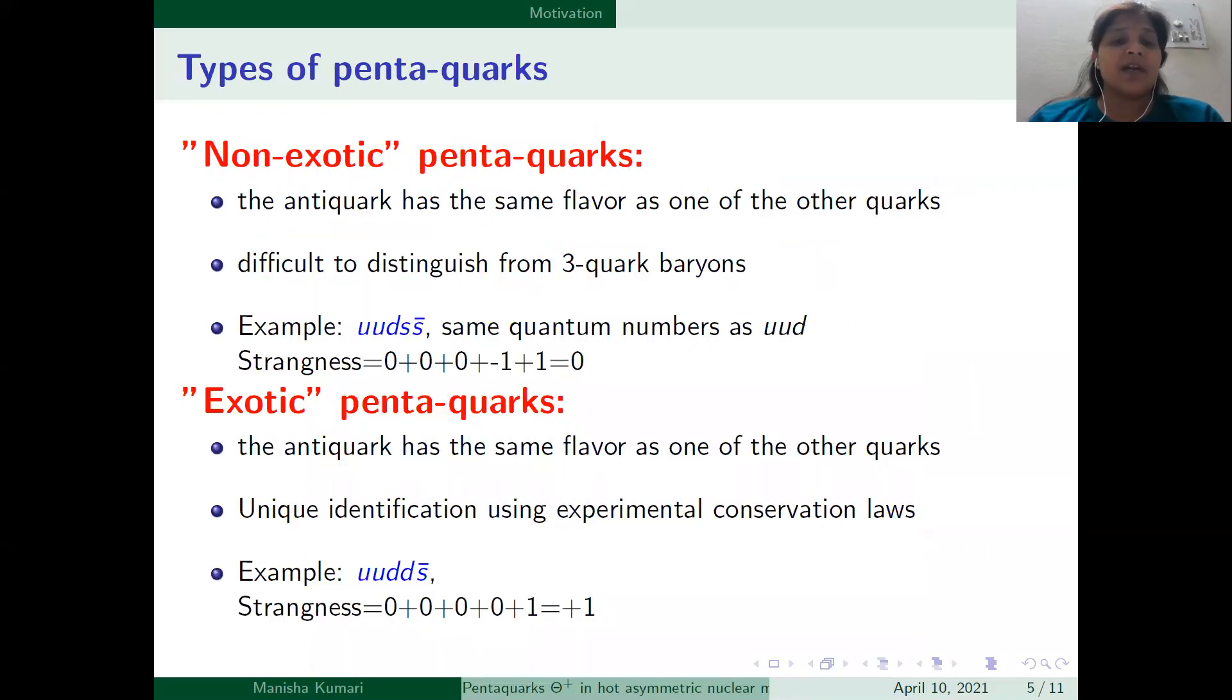There are two types of pentaquarks. One is non-exotic in which the anti-quark has the same flavor as one of the other quarks. It's difficult to distinguish from three quark baryons. For example, uuuds s-bar having zero strangeness.